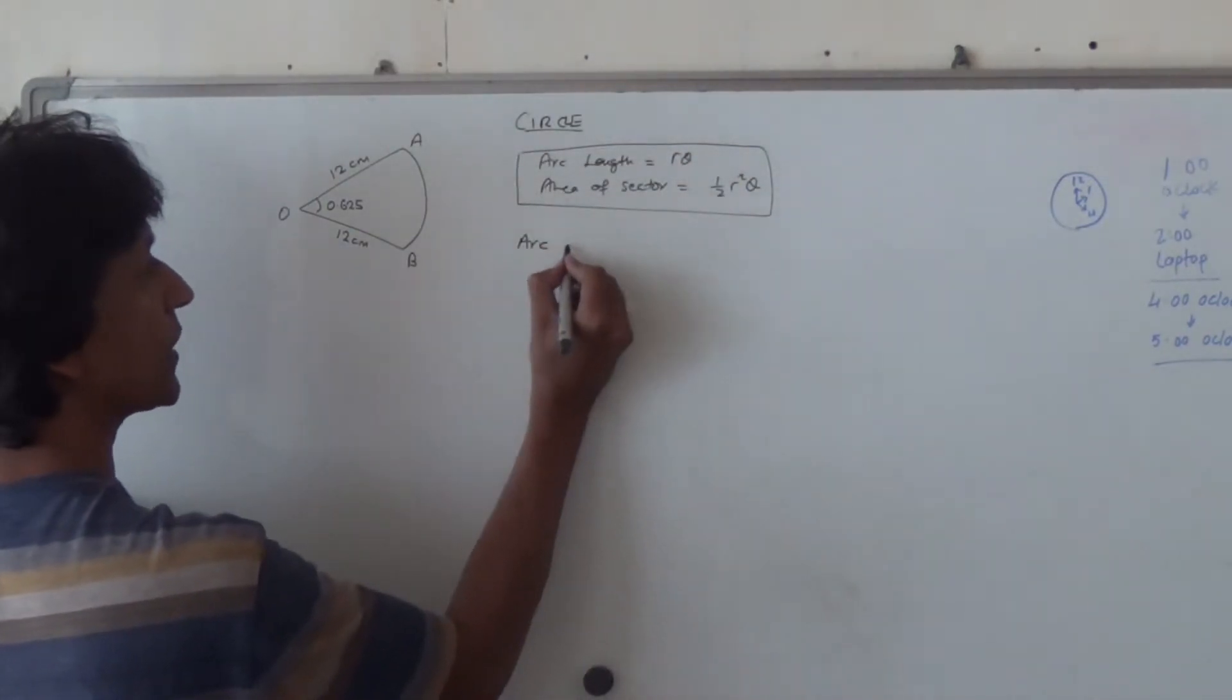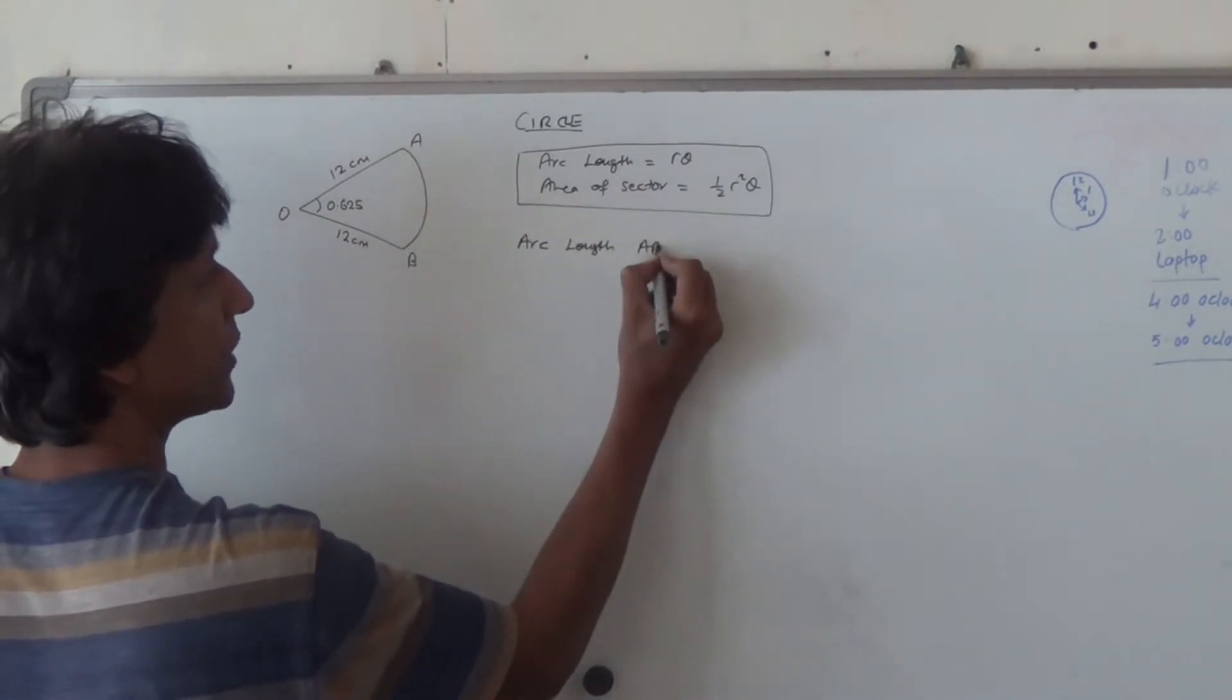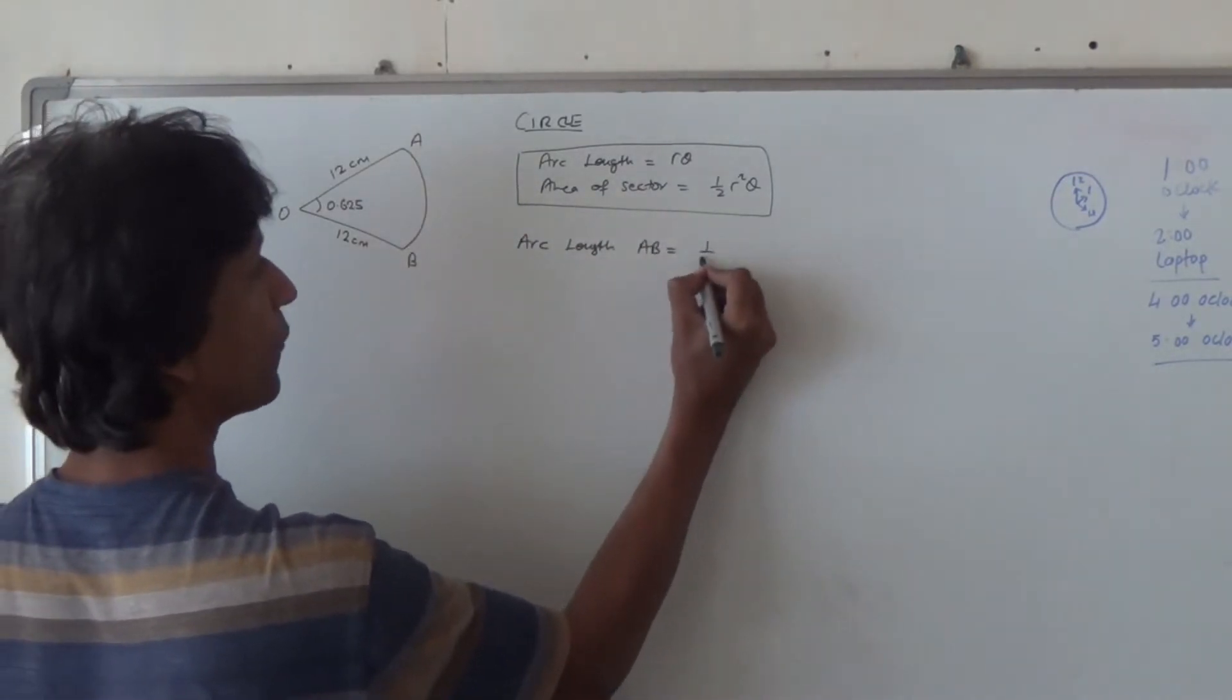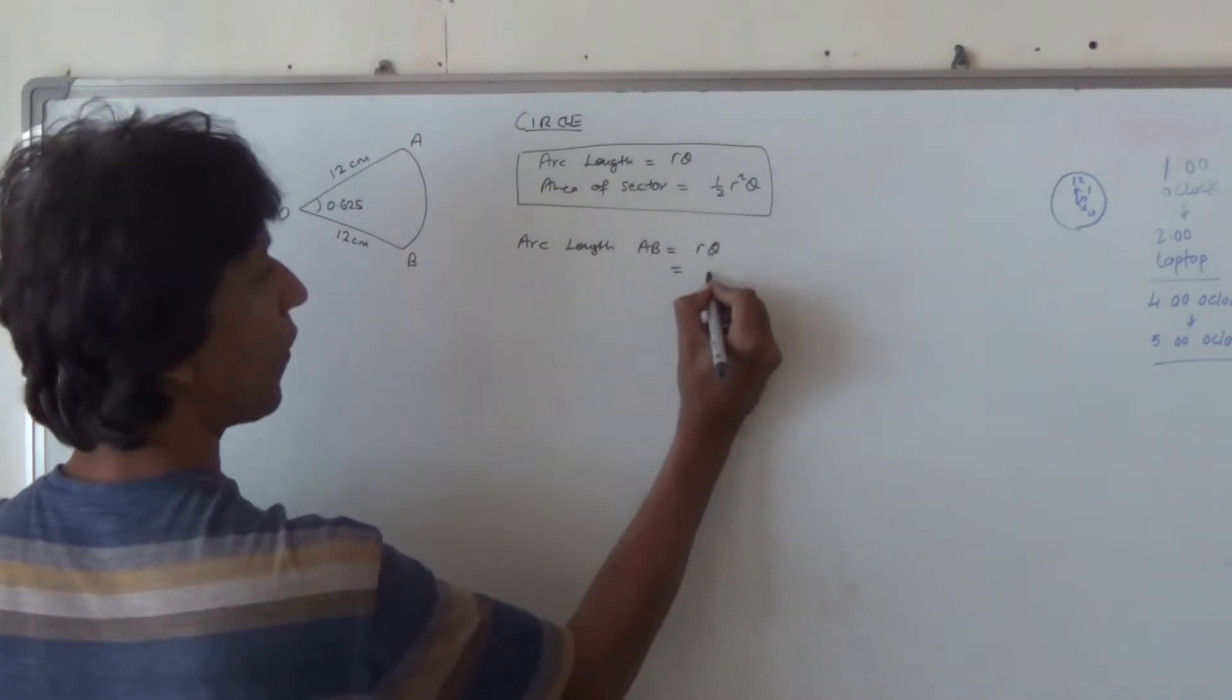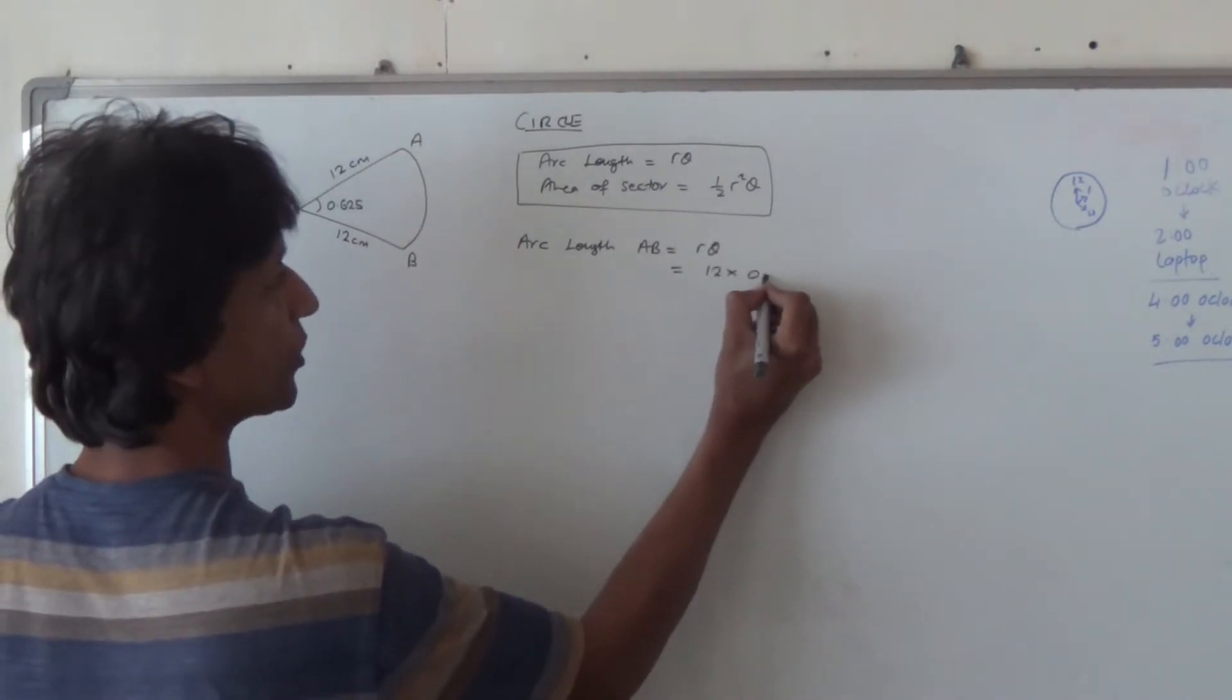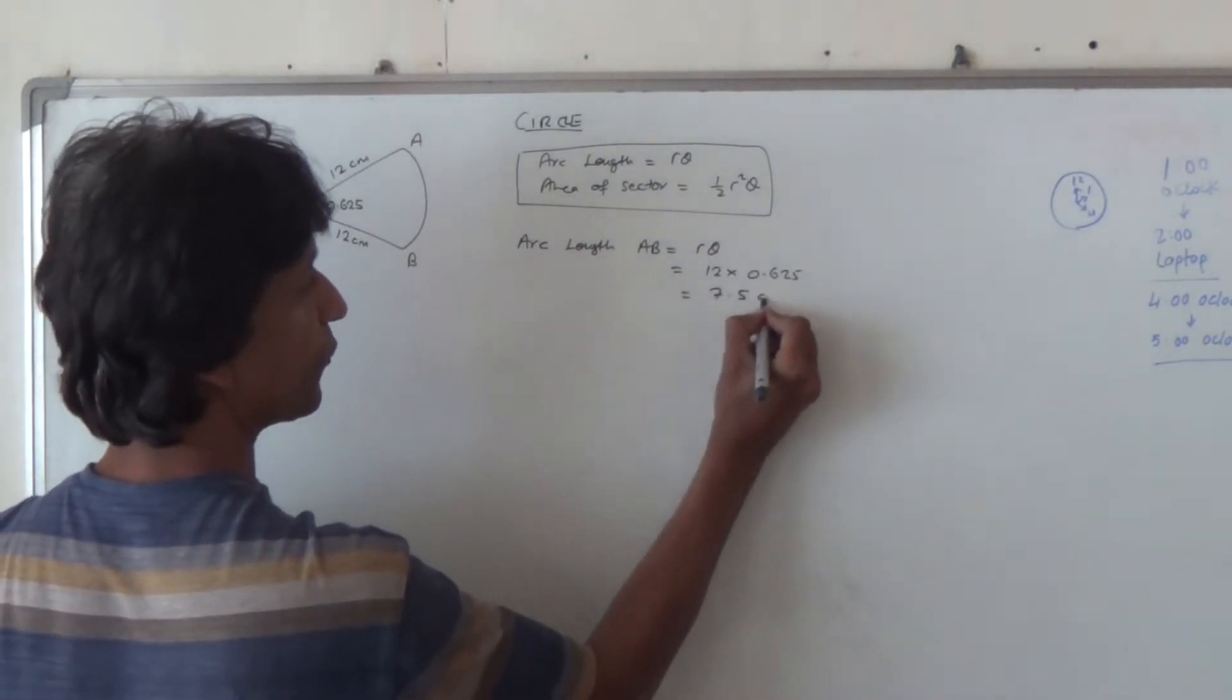Let us suppose I want the arc length of AB, so that's going to be equal to r theta, which is then 12 multiplied by 0.625, should be able to get 7.5 centimeters.